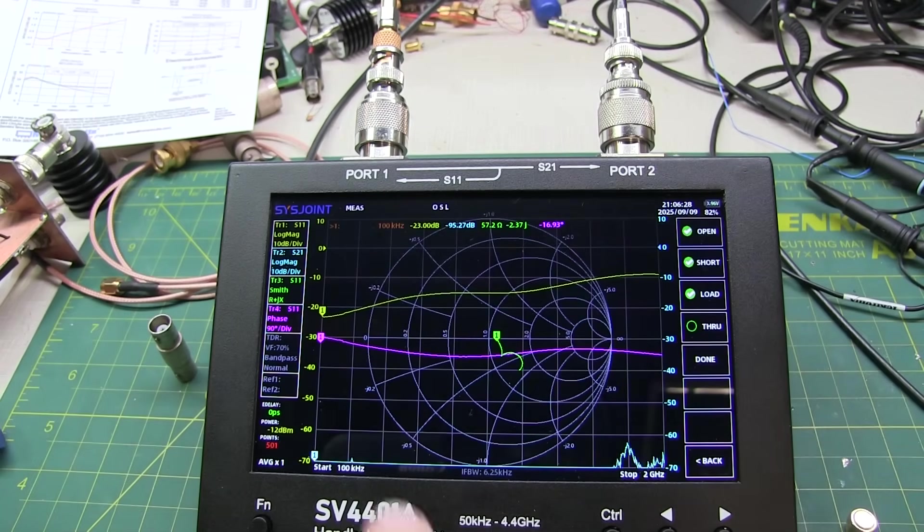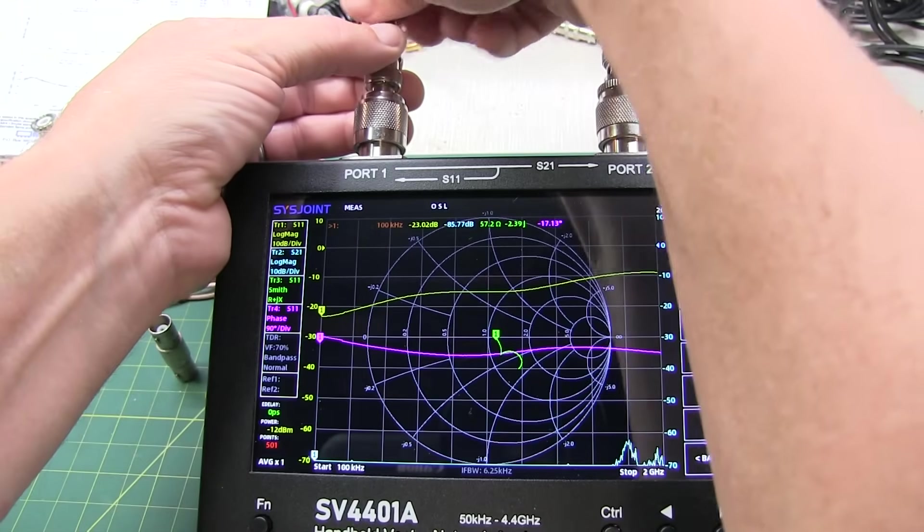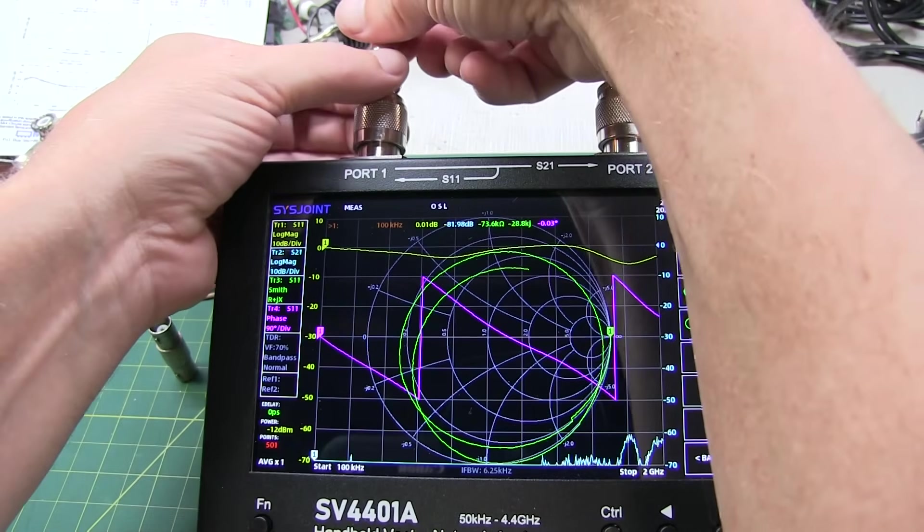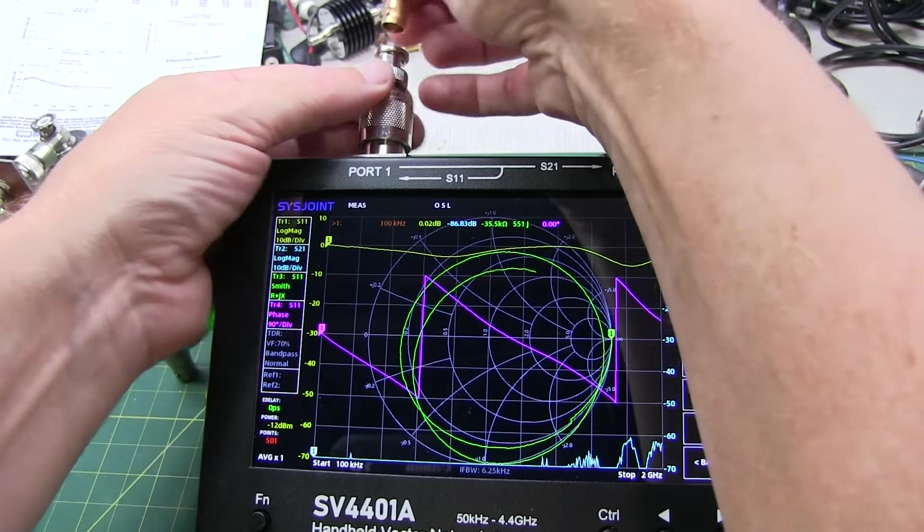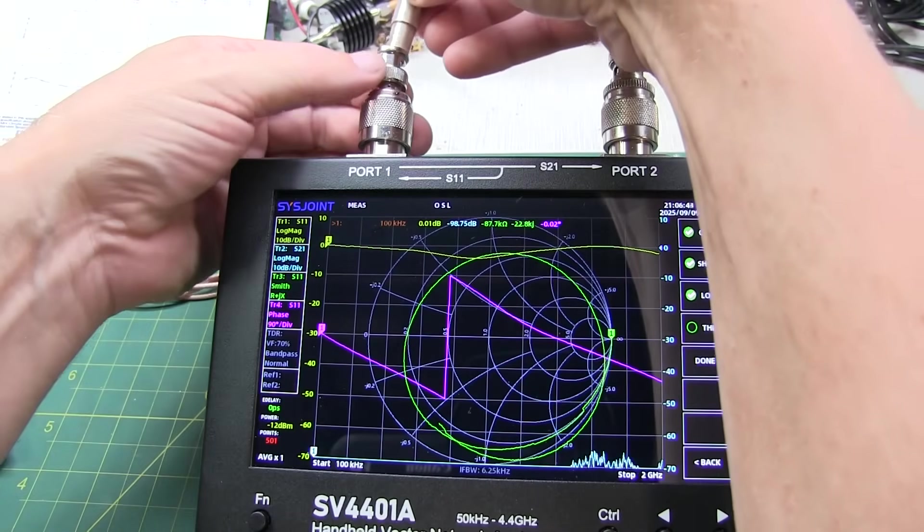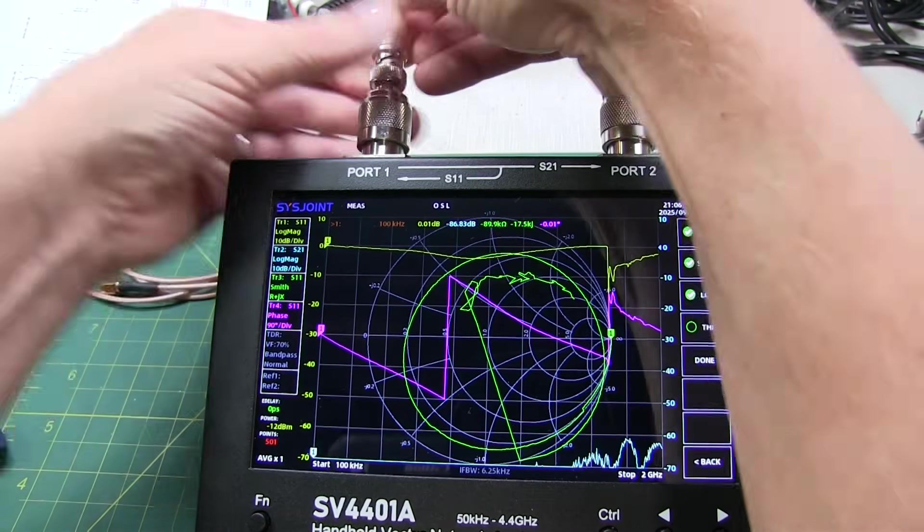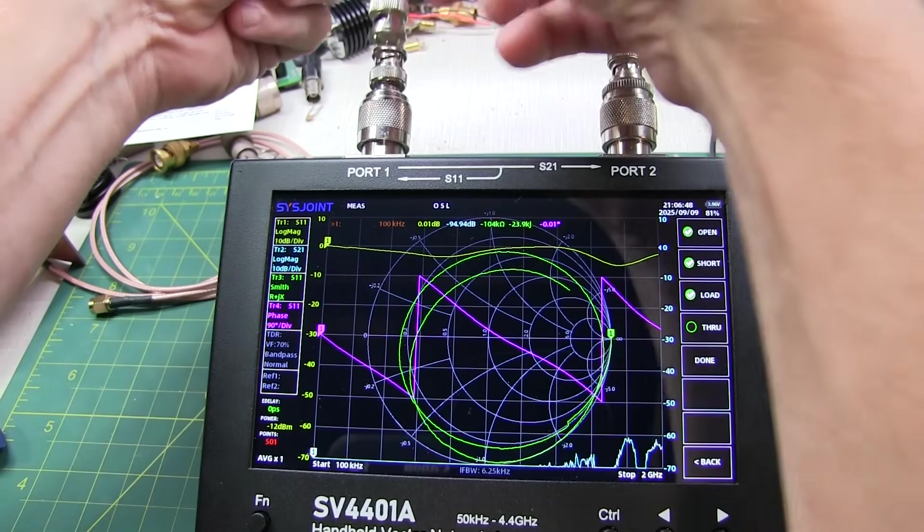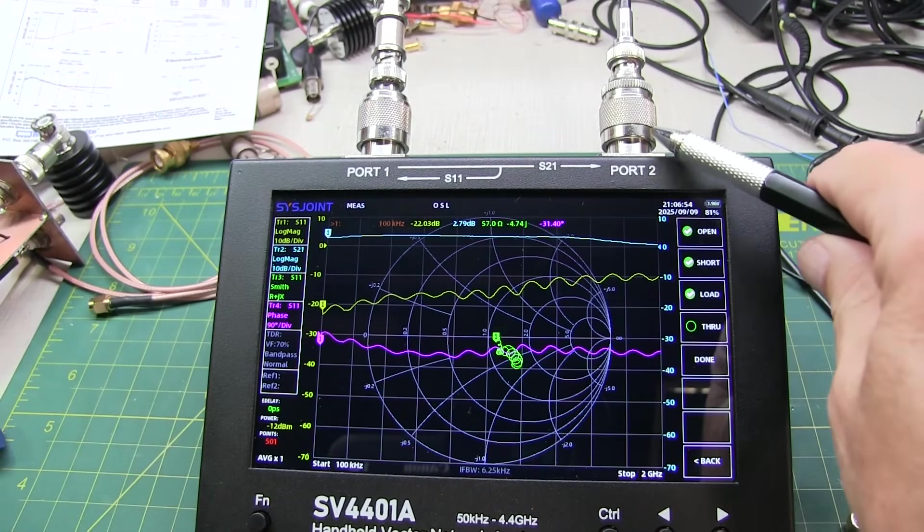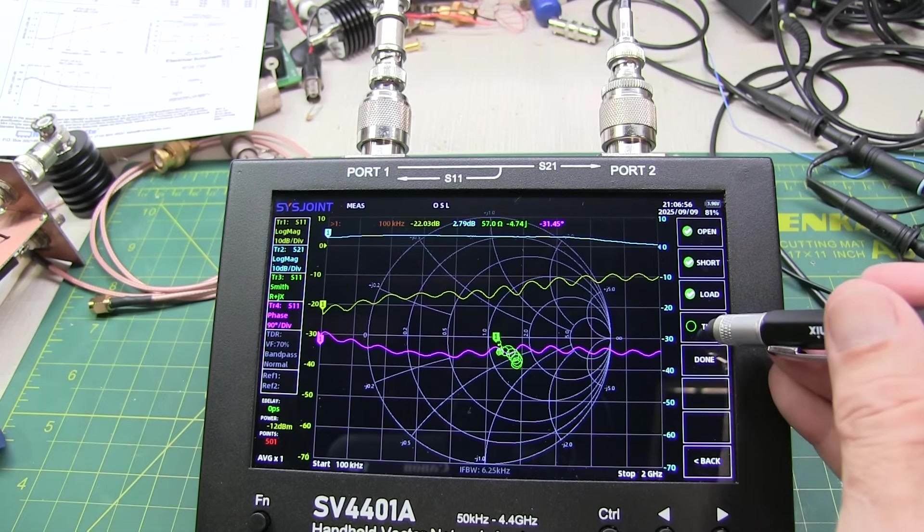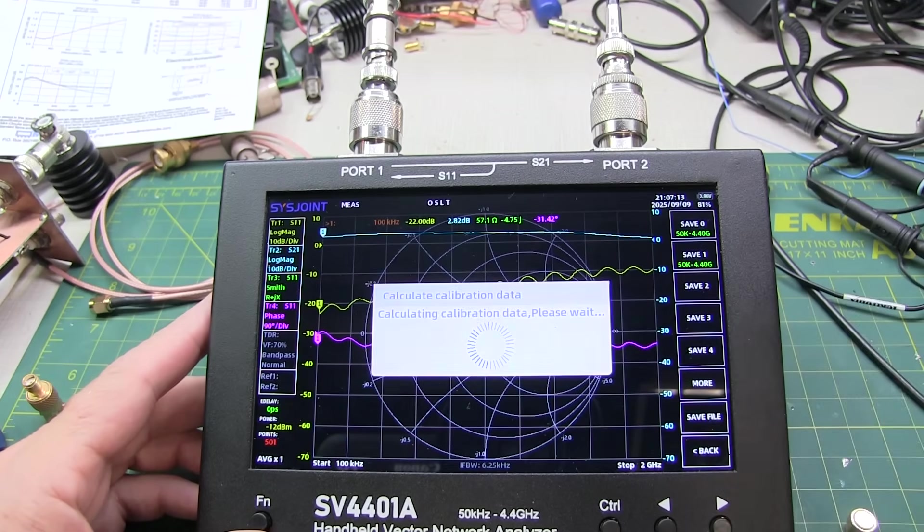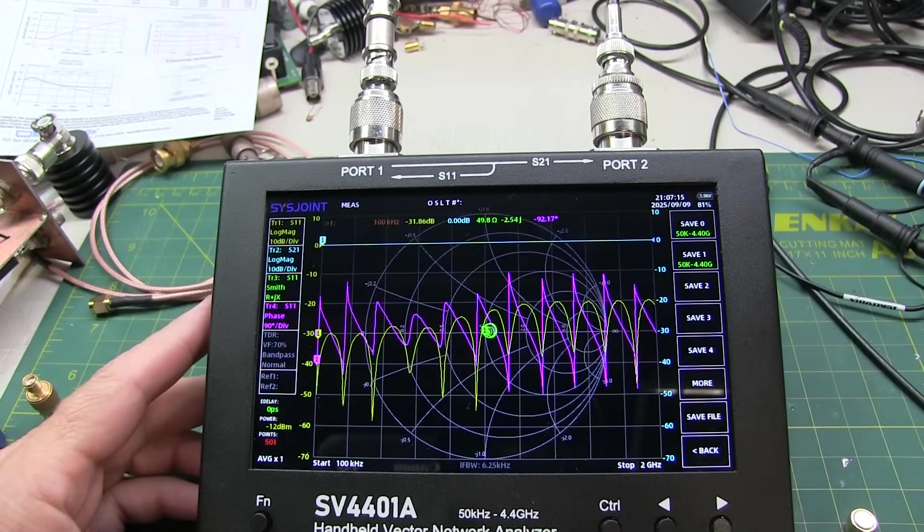So that completes our port 1 calibrations. The next thing we want to do is calibrate the through. So I'm going to remove the BNC to SMA adapter. I'm going to put in a BNC barrel. And use the cable that we're going to use when we do the through measurements. And connect that to the other end. Oh, that's also connected over here to port 2. And now we'll hit Through. With that done, we can hit Done.